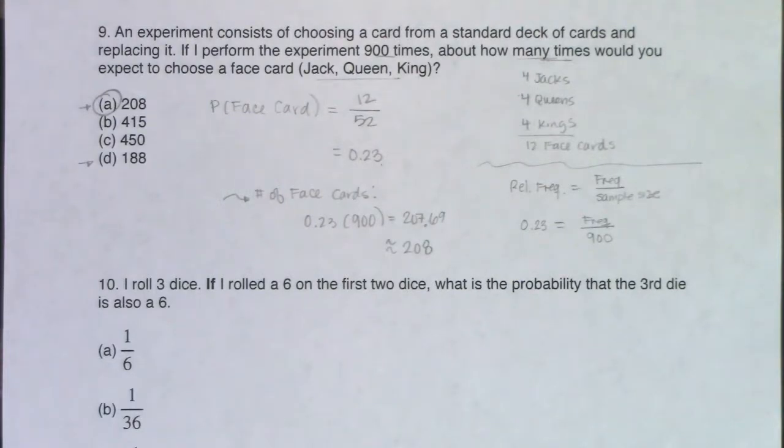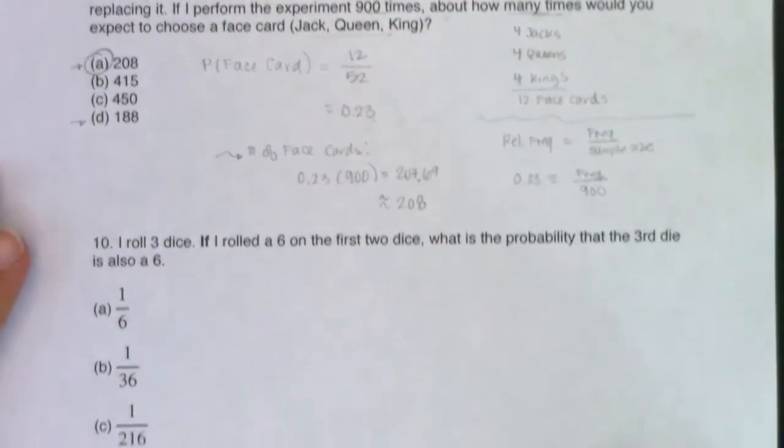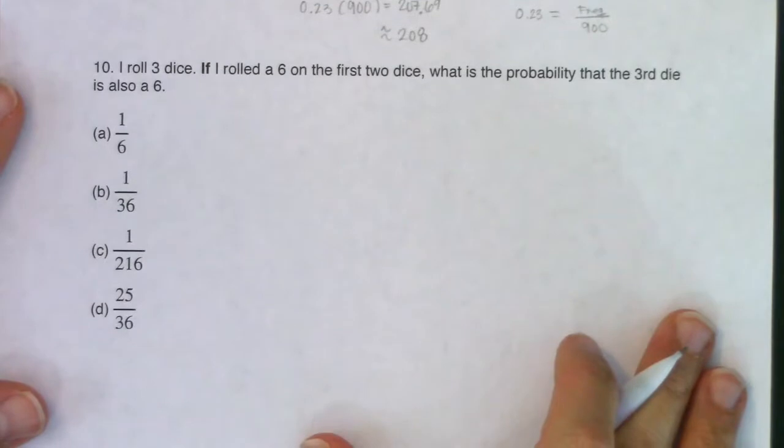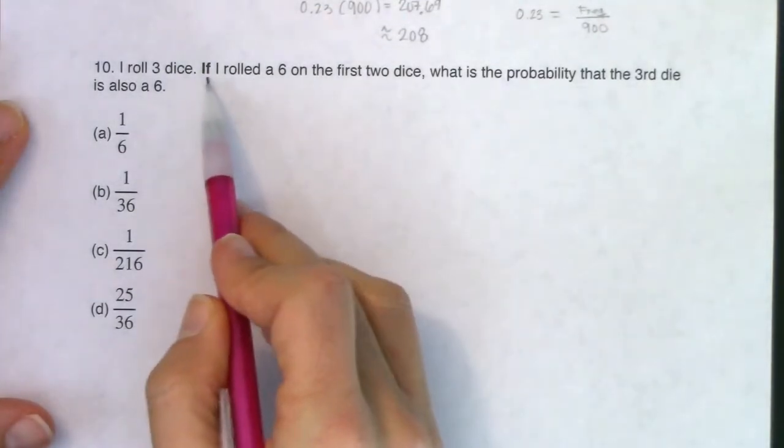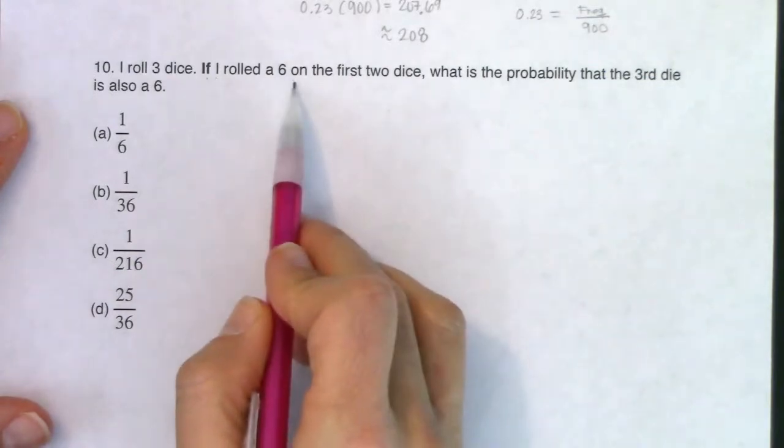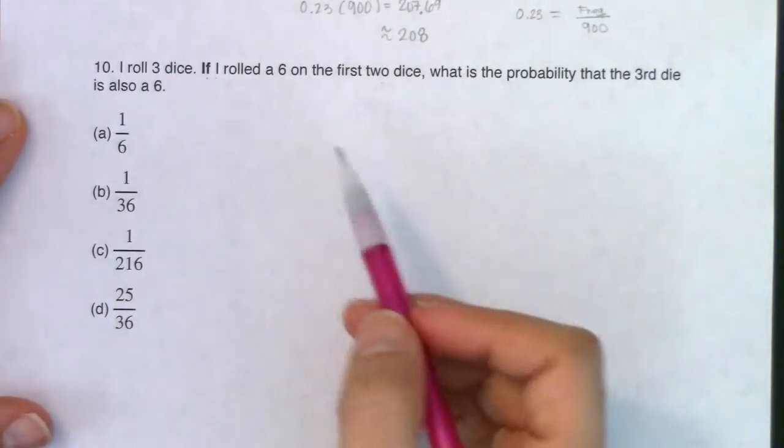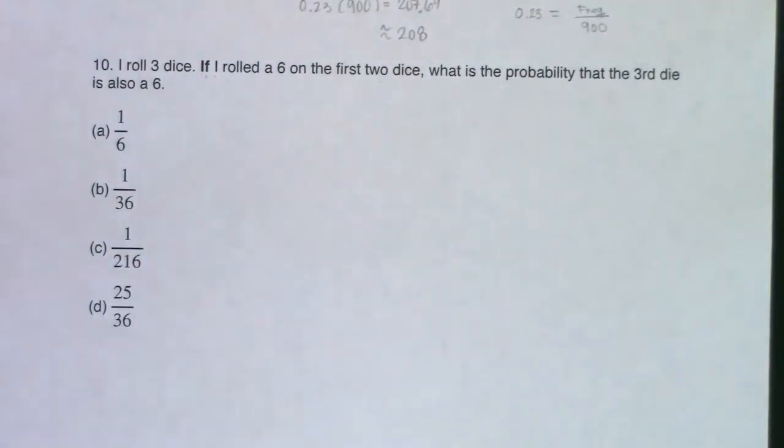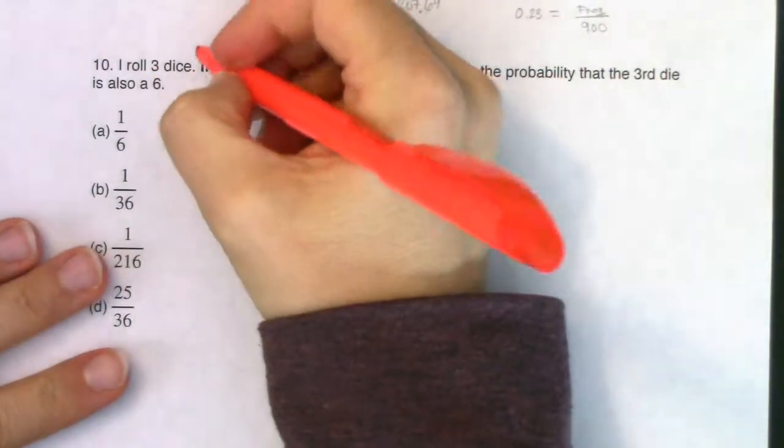All right, so with that, let's take a look at number 10. So number 10, it says I roll three dice. If, and I put that in bold for a reason, if I rolled a six on the first two die, what is the probability that the third die is also a six? So there's the conditional sentence, or conditional phrase, if.